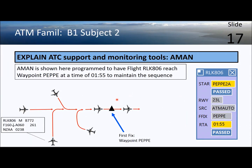On this slide we can see that AMAN has scheduled flight RLK 806 to arrive at this waypoint at a time of 1:55. If the aircraft arrives at that time it will maintain the sequence with the rest of the aircraft flowing in. The STAR is a standard arrival, so RLK 806 is aiming to arrive at this waypoint at 1:55 and then begin its standard arrival procedure, joining from the end of its en-route flight plan to the beginning of the active runway.